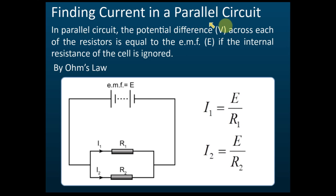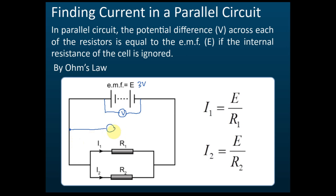Finding current in the parallel circuit. So this is a parallel circuit. We assume that there is no internal resistance, and therefore the potential difference is equal to the EMF. So if the EMF is equal to 3 volts, this is 3 volts. If you connect the voltmeter here, this is also 3 volts. And if we connect the voltmeter here, what's the potential difference?